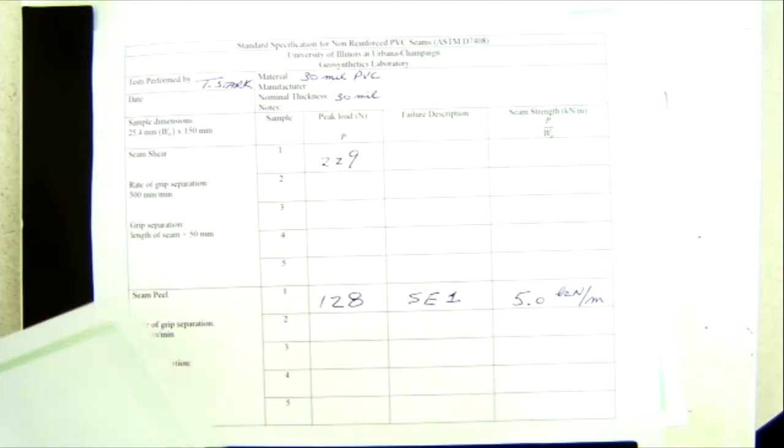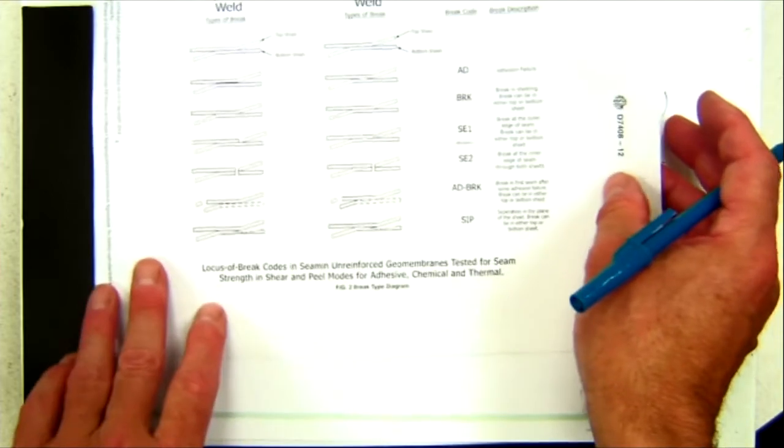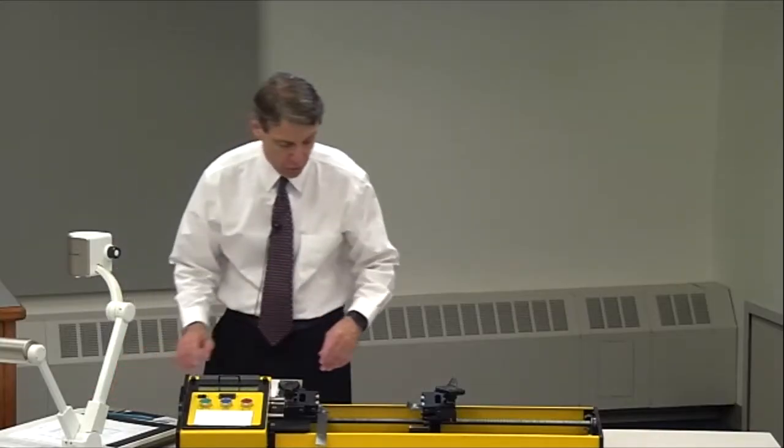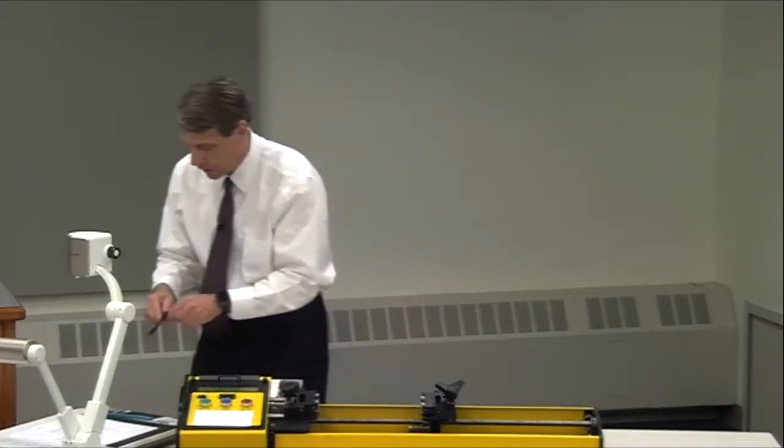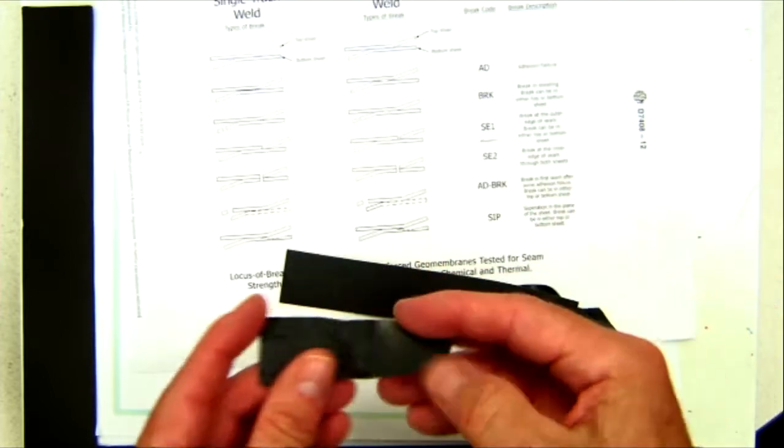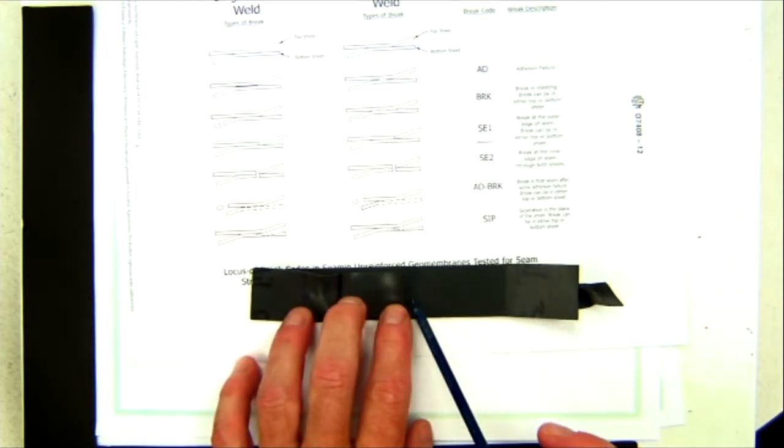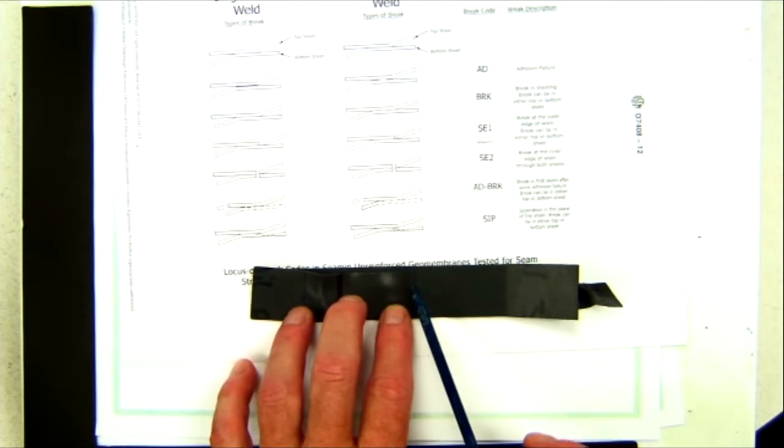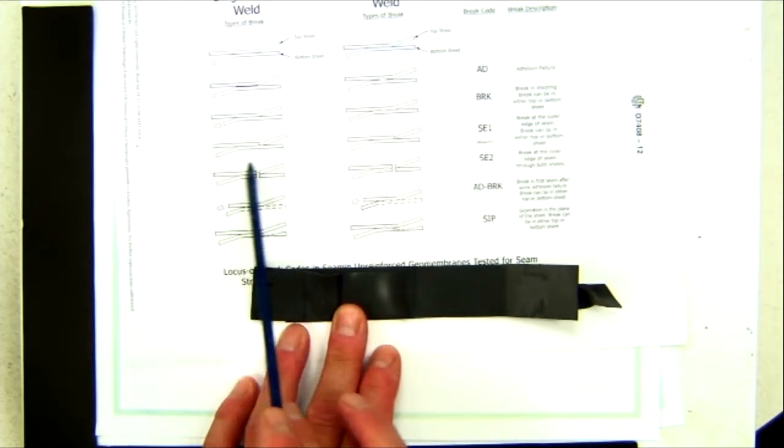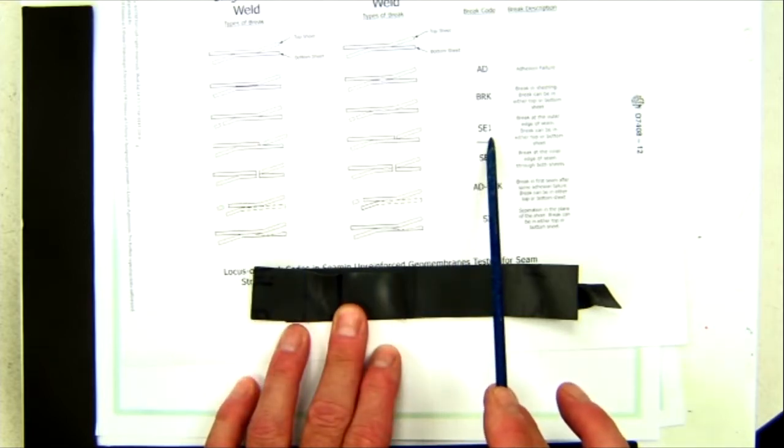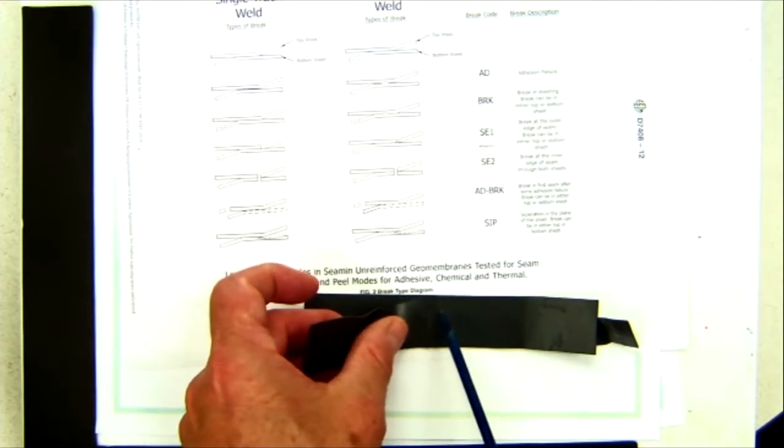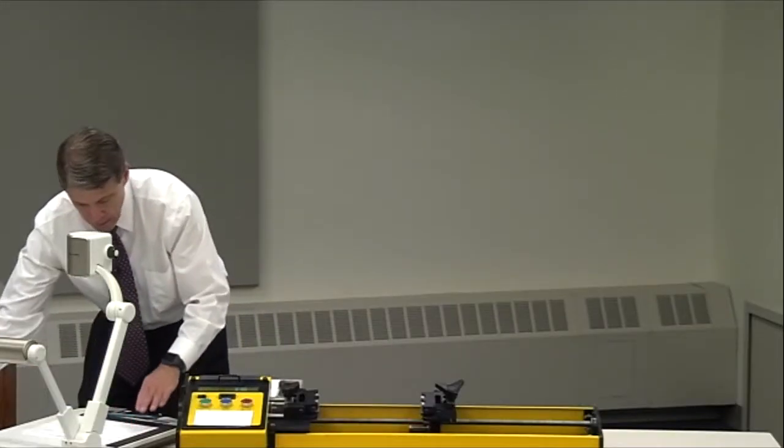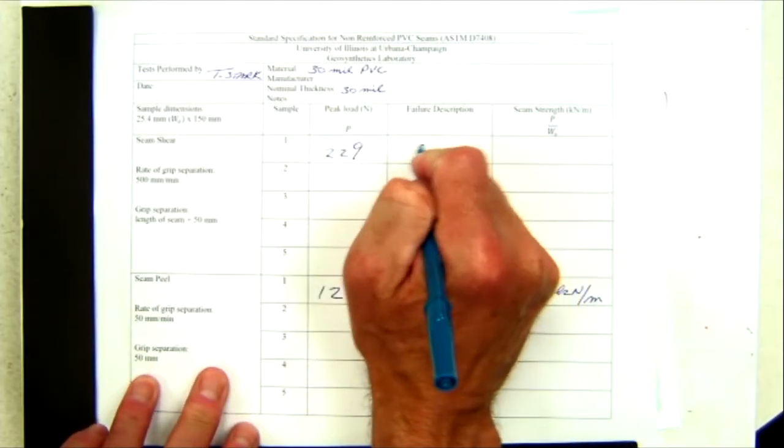Now, the next piece of information that's placed on the datasheet is the failure description. In ASTM D7408, there are failure code descriptors that are shown on the screen. The seam is taken out and the failure occurred right here where the parent material pulled away from the seam. So this failure mode is similar to this one here in D7408, which is SE1. So SE1 would be added to the datasheet. And there's the break. SE1.